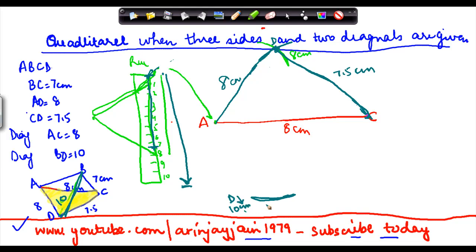I also know BC. BC I know is 7 centimeters. From C, I will cut an arc which is 7.5 centimeters from C. I put my needle here and draw an arc at 7.5 centimeters. This point of intersection is the point called B. Then I draw a straight line from B to C, which should be 7.5 centimeters, and I draw a line from A to B.